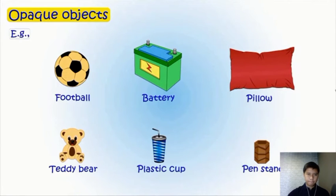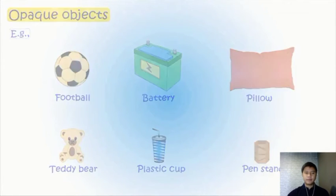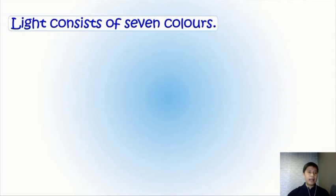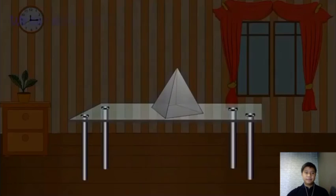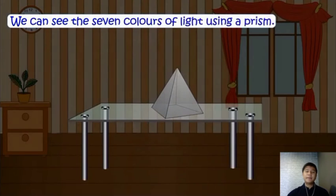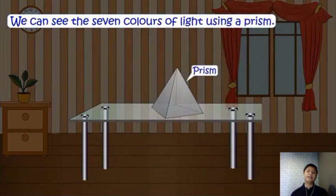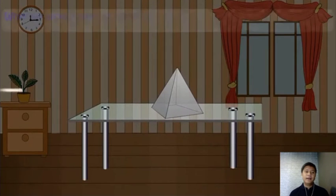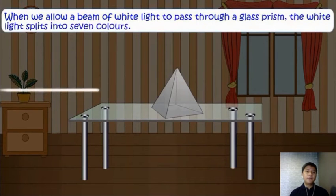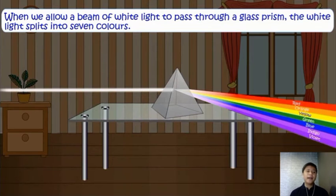Light consists of seven colors. Did you know that? We can see the seven colors of light using a prism. When we allow a beam of white light to pass through a prism, the white light splits into seven colors. You can see.